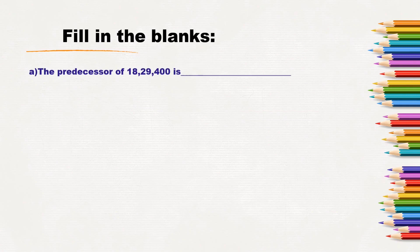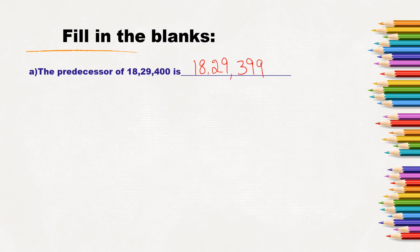Fill in the blanks. First question: the predecessor of 18,29,400 is? Predecessor means when we subtract one from a given number, we get its predecessor — it is the before number. So, the predecessor of 18,29,400 is 18,29,399.